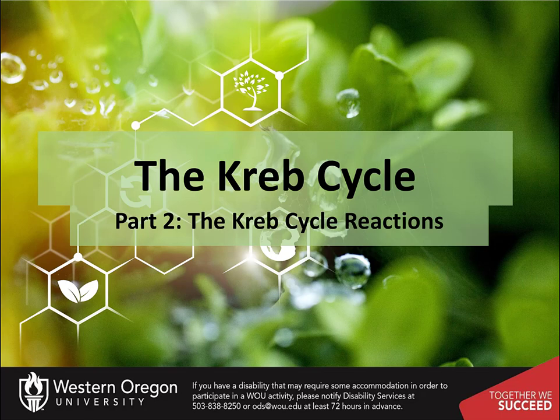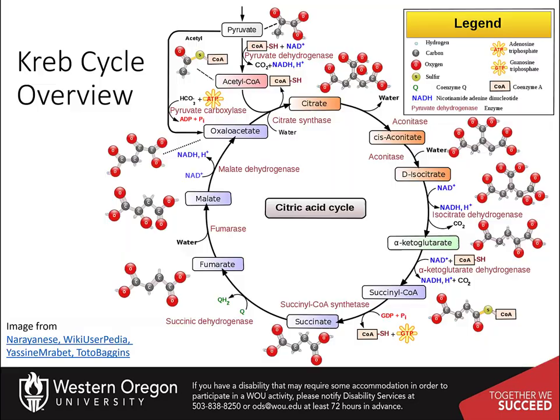Welcome to part 2 of our lecture series on the Krebs cycle. This tutorial will go through the metabolic reactions of the Krebs cycle in more detail. The Krebs cycle has a total of 8 metabolic reactions involved in the full oxidation of our food molecules to carbon dioxide.